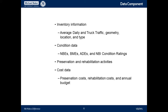In the data component, you also have condition data: national bridge elements, bridge management elements, agency-defined elements, and NBI condition ratings. Because of the way AASHTO guided the software development, it pretty much mandated that people using the software do dual inspections, since there's no converter anymore to convert national bridge elements to NBI condition ratings for reporting.